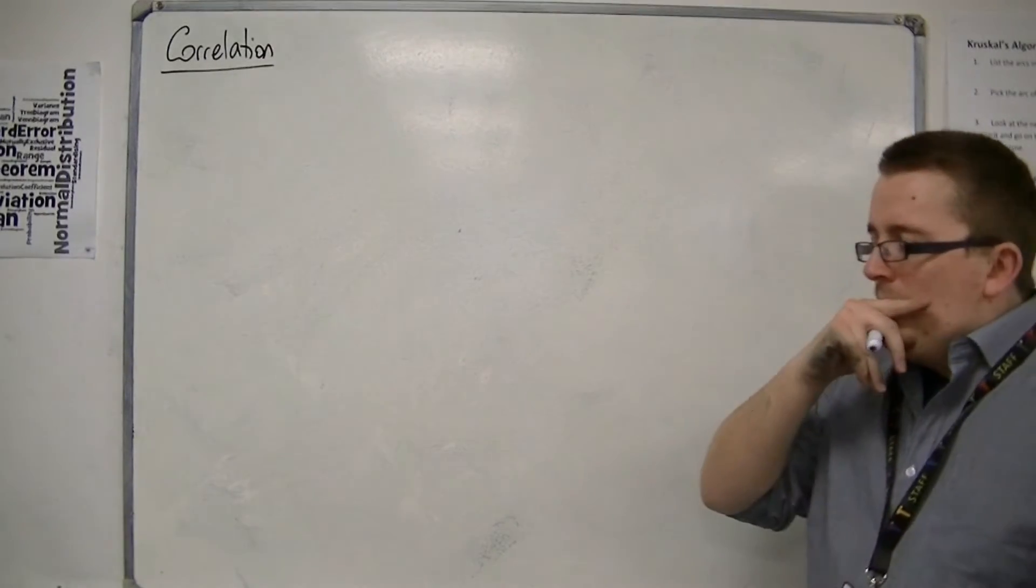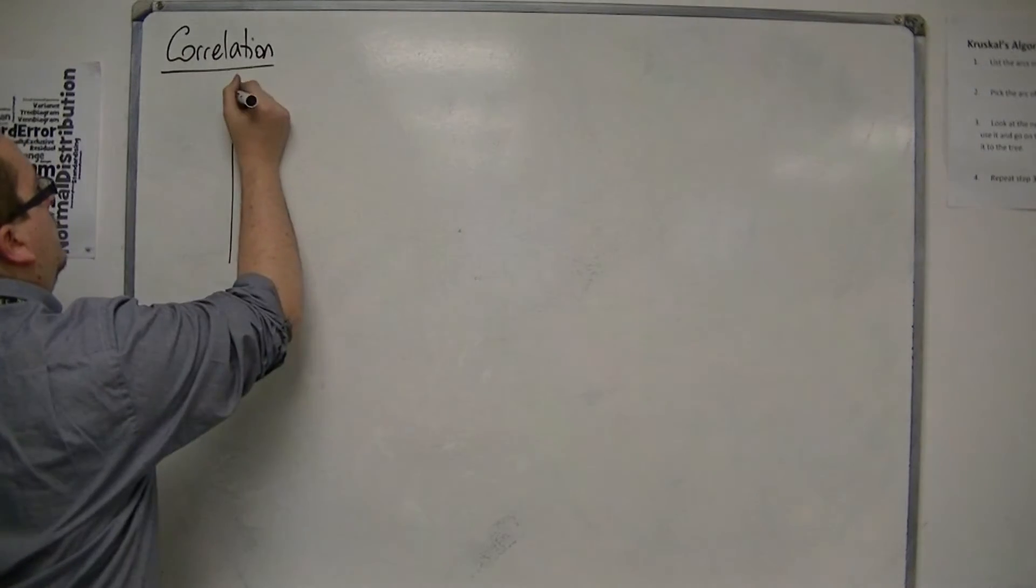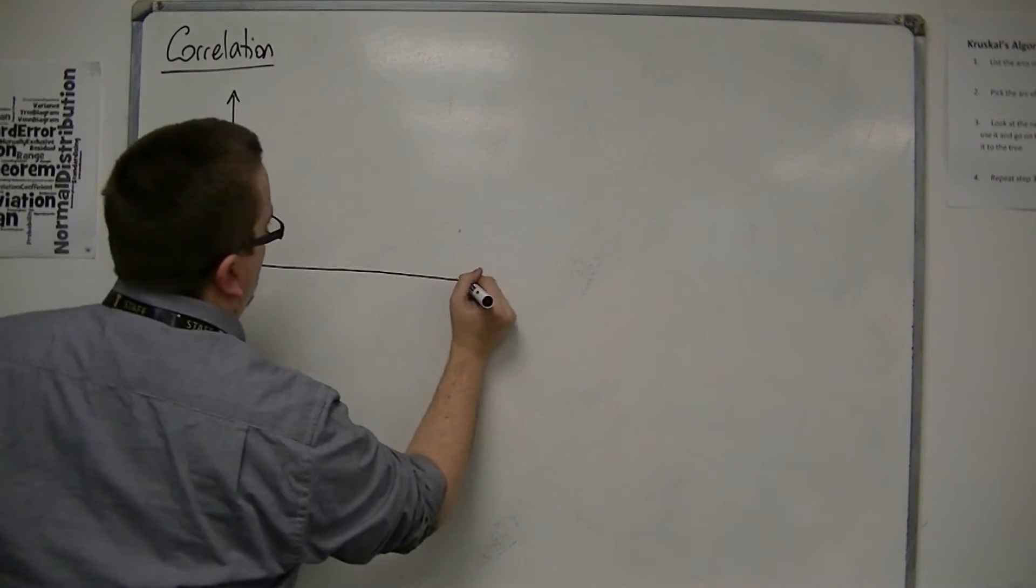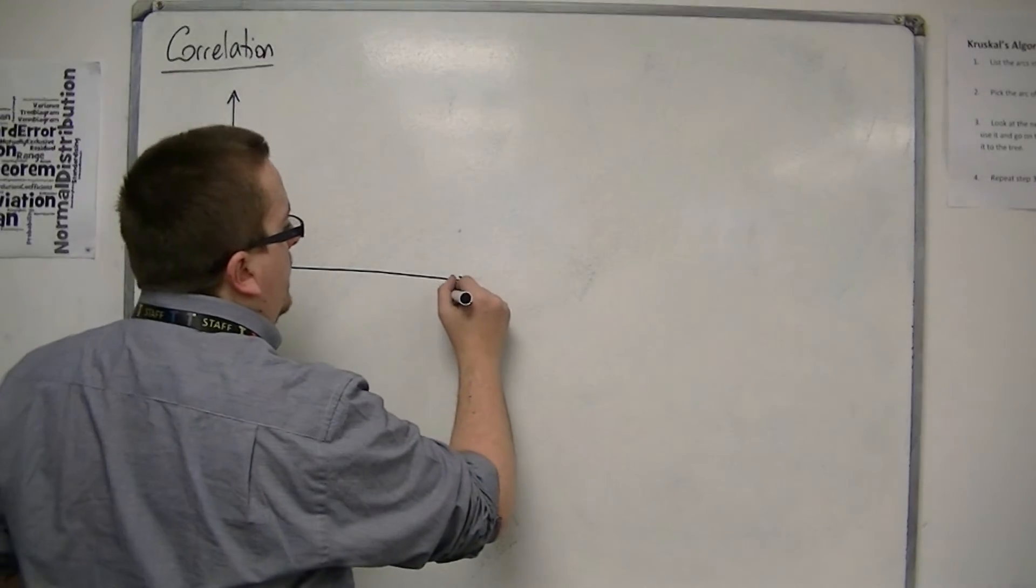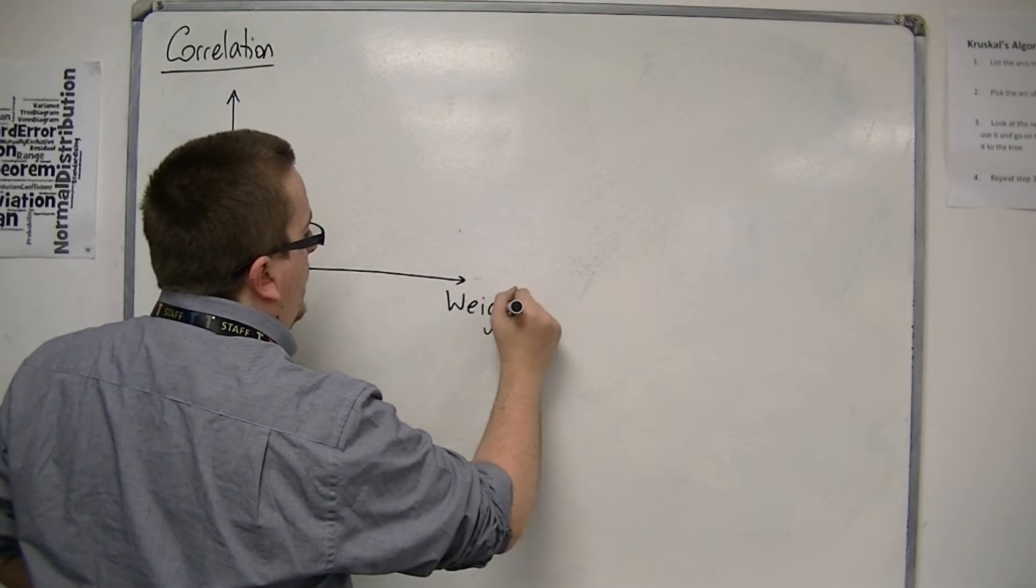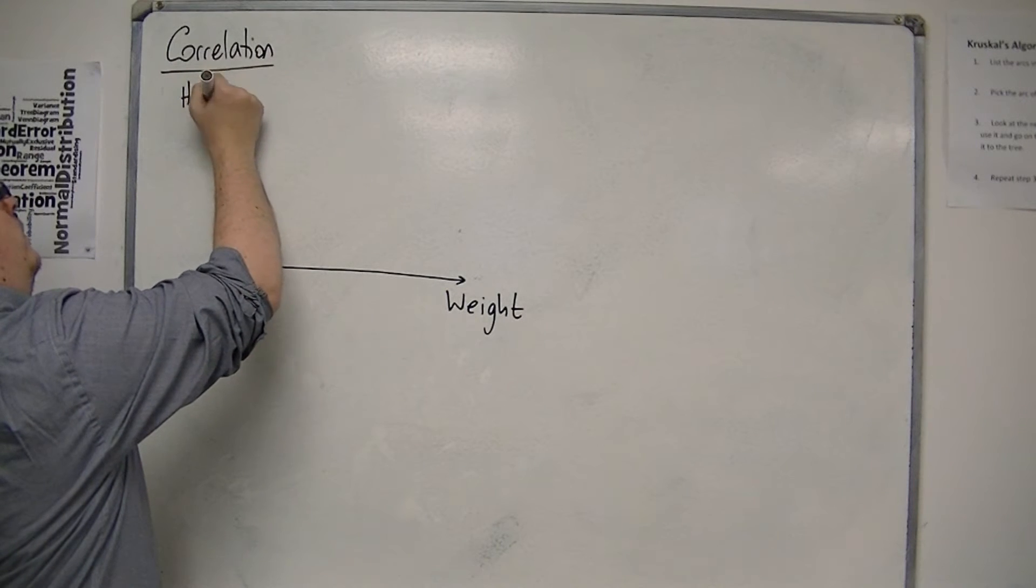So first of all, let's see what one looks like. A scatter graph uses an XY coordinate axis much like you're used to already. And it may well be that we have weight along the bottom, and then height for the vertical axis.